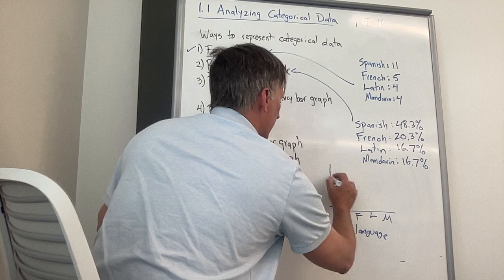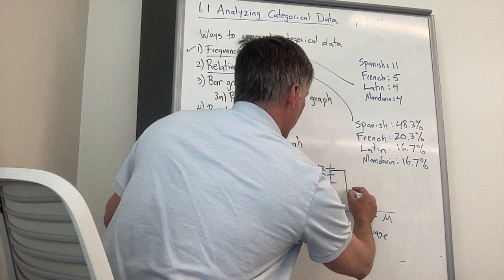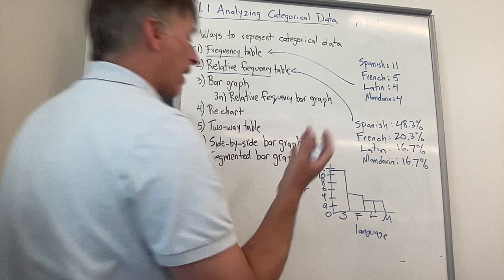I'll do some sort of little scale here: 2, 4, 6, 8, 10, 12. Put a zero there. And then let me just make some bars. There's the Spanish bar. Here's the French bar. And then both of these bars are kind of looking the same. So that's a bar graph.